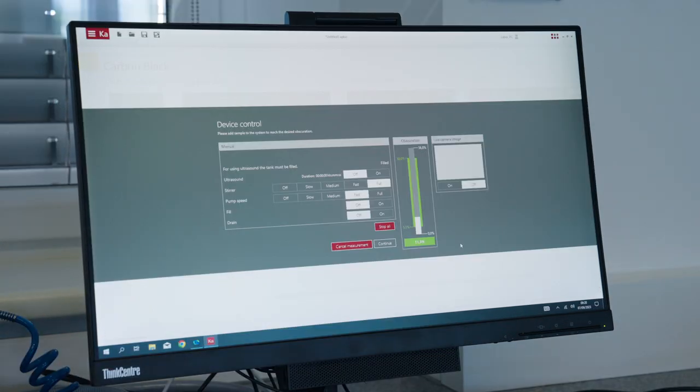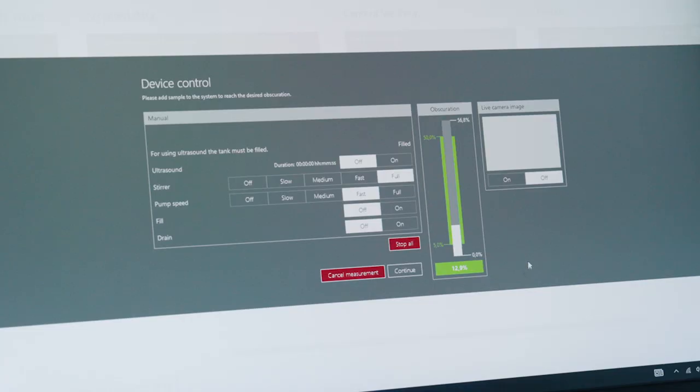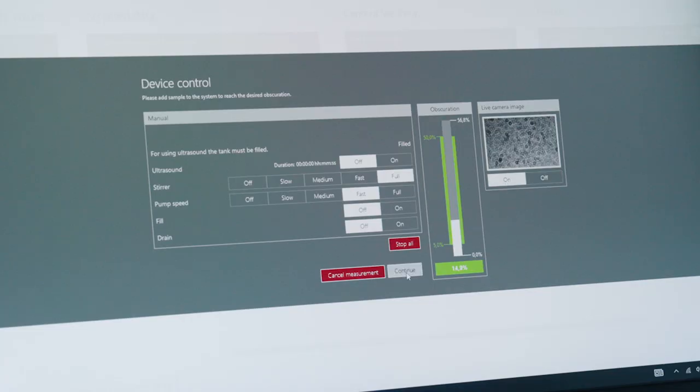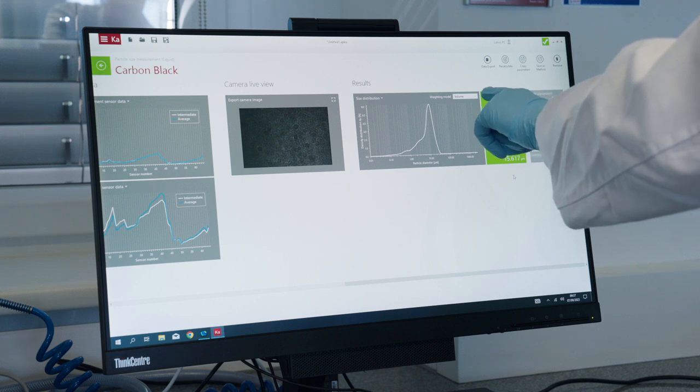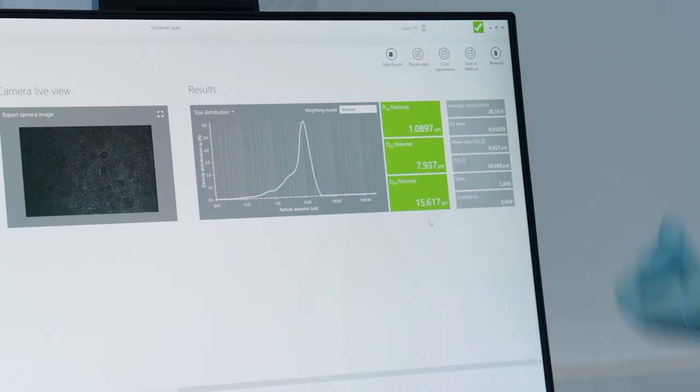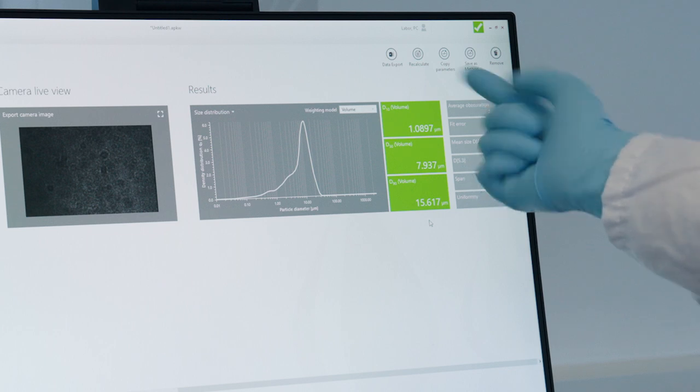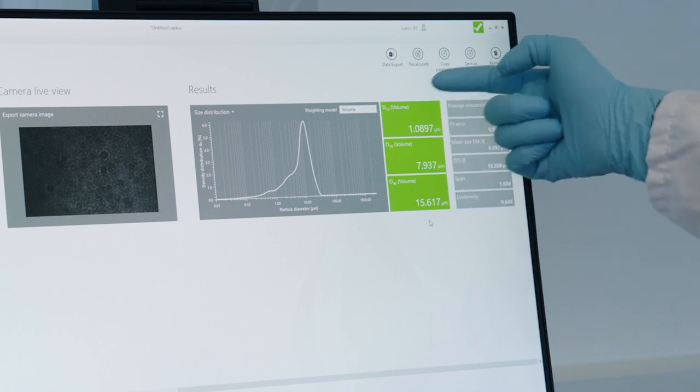As soon as the sample is added, you can see a live camera image of the circulating liquid. Pressing continue will start the measurement. The analysis stops once the size distribution is computed, and the median particle size of electrode material is automatically calculated.